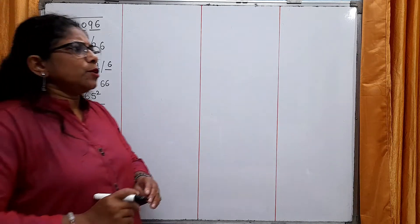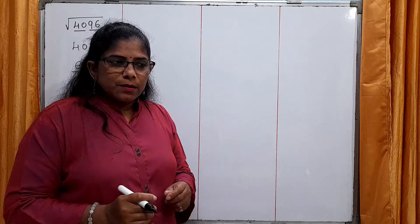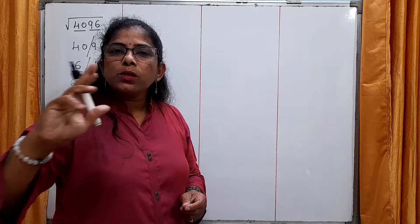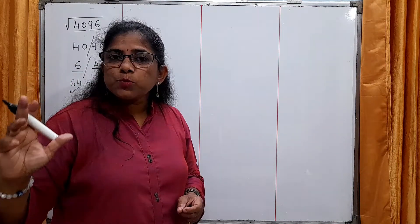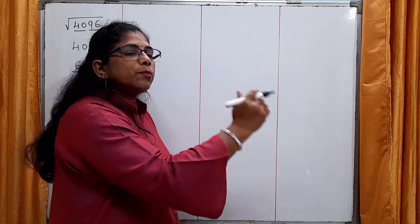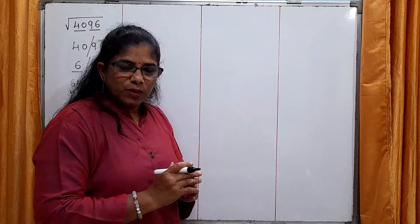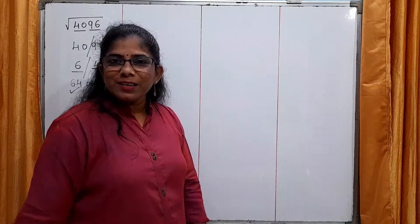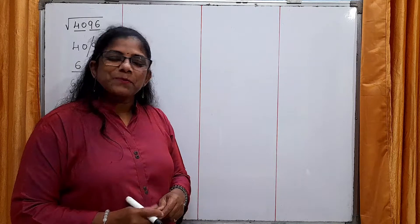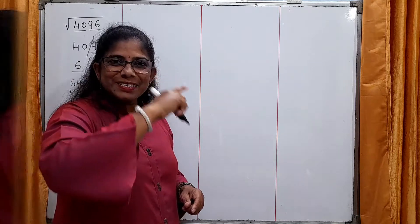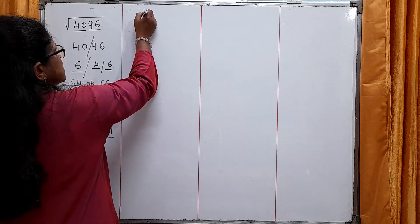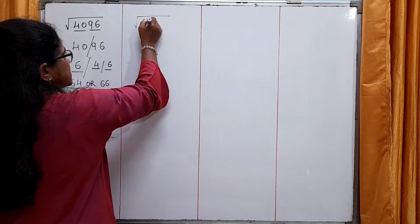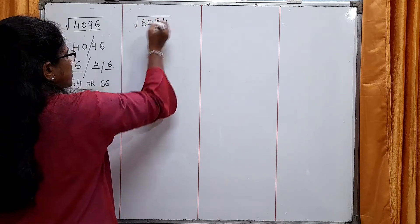The first example you may find a little bit lengthy. This is the reason why I told you to watch all four examples properly. By the time you finish watching this video, you will be perfect in finding the square root by estimation method. Second example: let's find the square root of 6,084.